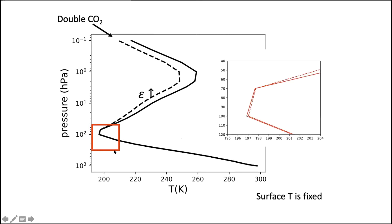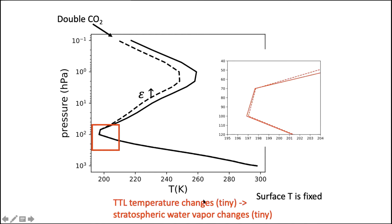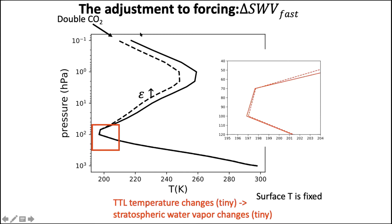Focusing on the TTL region, we zoom in and see that the new temperature profile shows cooling in the stratosphere, but at the 100 hPa level close to the tropopause there is a tiny temperature increase. This tiny TTL warming results in a tiny increase in stratospheric water vapor. However, the 21st century TTL temperature increase is about 2 K and is much larger than this tiny fast adjustment. That's because the fast adjustment occurs before the surface temperature changes, and previous studies show it is small.